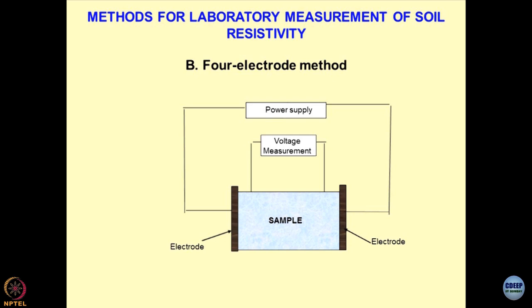This is the geophysical method. What we do is we apply the current to the sample and measure voltage within the sample — this becomes four electrodes. These measurements are more precise compared to the two-electrode method because even if polarization occurs at the interface, we can utilize the properties of the sample which is not connected with the electrodes directly.